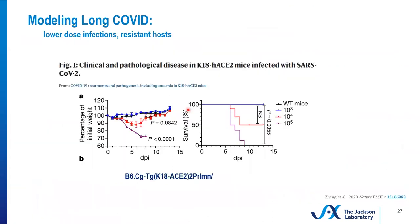So how might we model long COVID? This is a very novel question, but it's one that's going to become more and more important as the pandemic wears on. First of all, we need the mice to survive — that's where lower dose infections could come in. Here's some data that we looked at earlier in the talk, but I want to draw your attention to the lower viral dose. The blue line here is 10^3 variants used for the infectious dose, and you can see that there's not a huge change in body weight compared to wild-type mice. There is a dip in body weight early in the infection, but the mice recover and regain weight. Could this be a phase of the infection that's somewhat analogous to long COVID? Do the mice eventually clear the virus completely? It's not really known at this point.